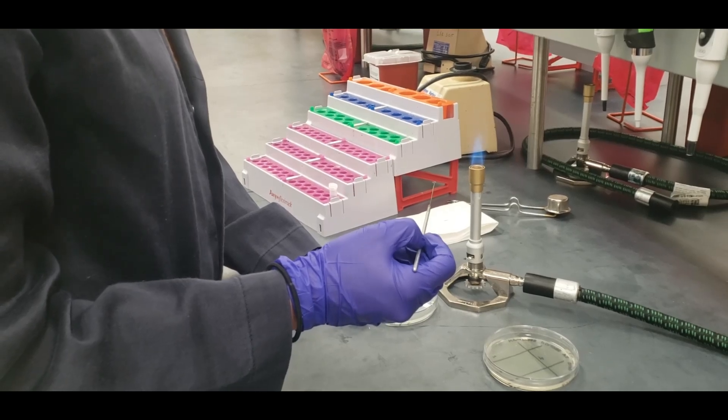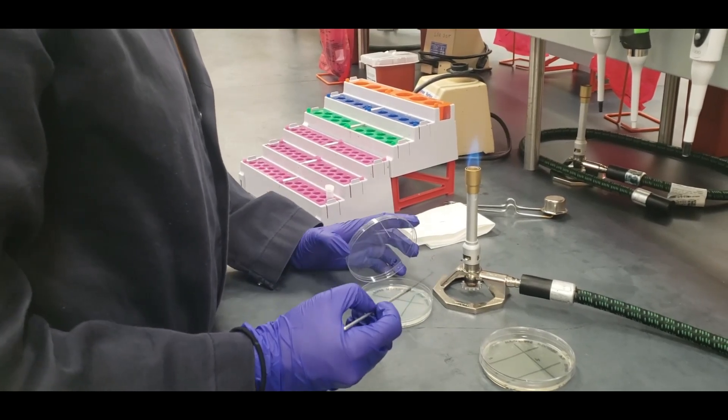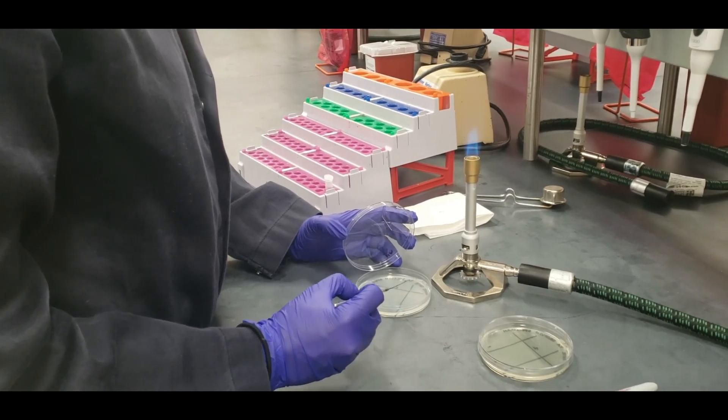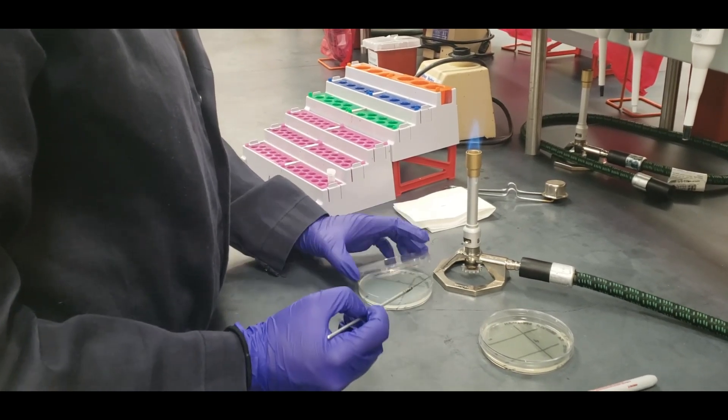Once it's cool, you're going to pull from the first section one time and completely streak the second section without crossing over into the first section.